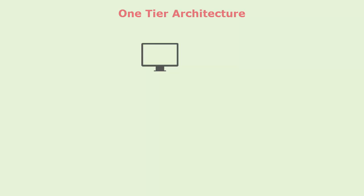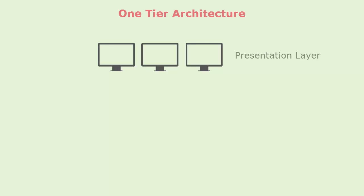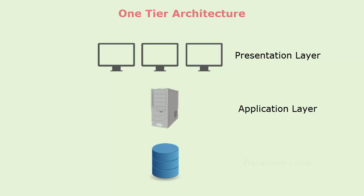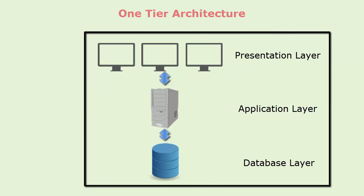Types of software architecture: one tier architecture. A one tier application is also known as a standalone application. One tier architecture has all the layers — such as presentation, business, and data access layers — in a single software package. Applications which handle all three types, such as MP3 player and MS Office, come under one tier application. The data is stored in the local system or a shared drive.